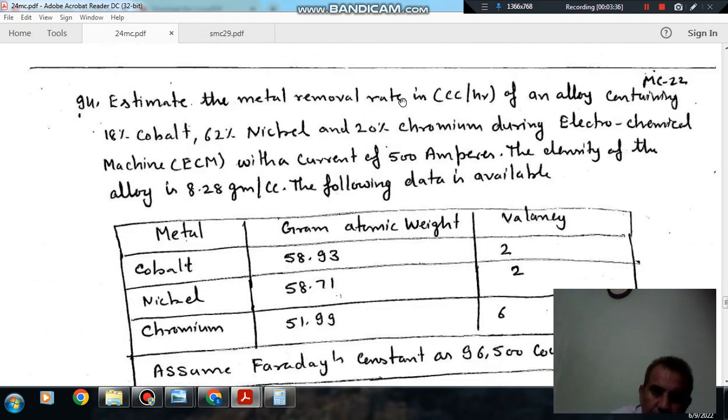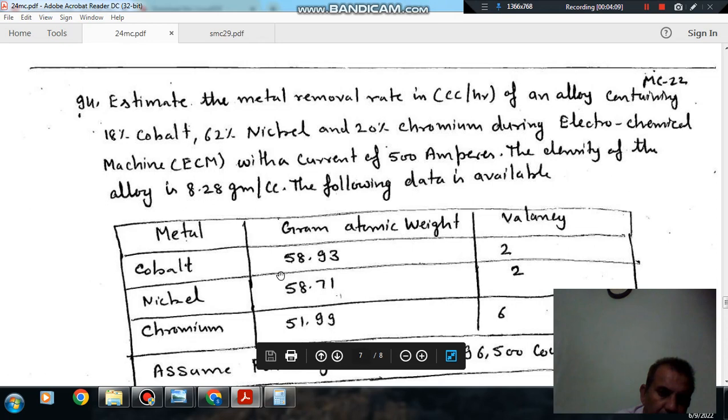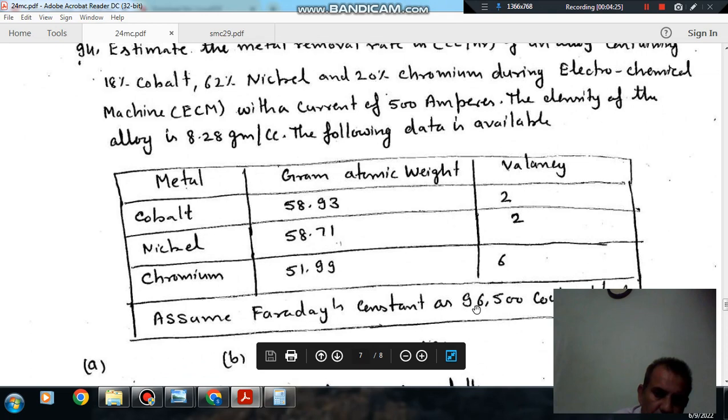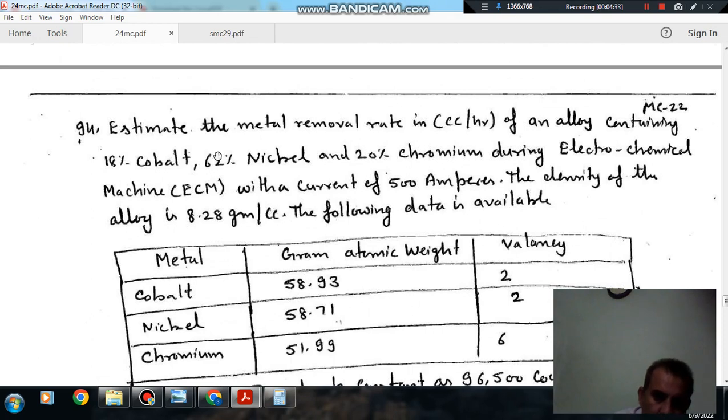Next, estimate the material removal rate in CC per hour of an alloy containing 18% cobalt, 62% nickel and 20% chromium during electrochemical machining with a current of 500 ampere. The density of the alloy is 8.28 gram per centimeter cube. The following data is available: gram atomic weight is 58.93 for cobalt, 58.71 for nickel, 51.99 for chromium, and valencies are 2, 2 and 6 for cobalt, nickel and chromium.